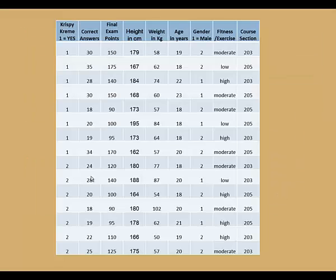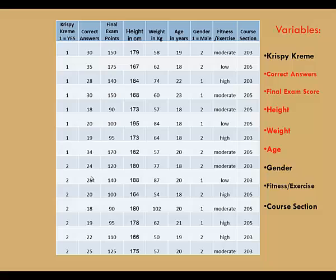Here's the spreadsheet with the data from my Krispy Kreme slash final exam experiment. The quantitative variables are correct answers, final exam score, height, weight, and age. Height and weight are measured, and those are continuous, while the other three are discrete.